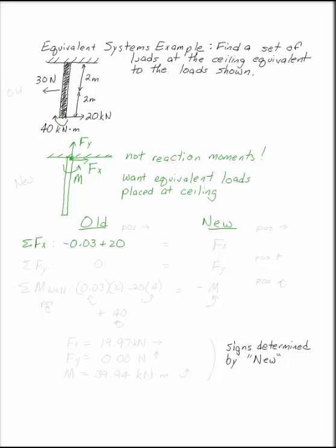I want to have my old equal to my new. If I take the sum of forces in the x direction on my original system, I have not 30 but 0.03 because I'm dealing with kilonewtons to the left, plus 20 to the right. Here I've got positive going to the right for my sum of forces in x. My sum of forces in x looks like Fx, old equals new.